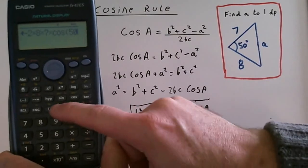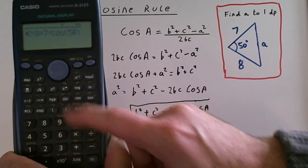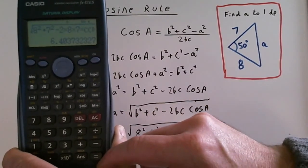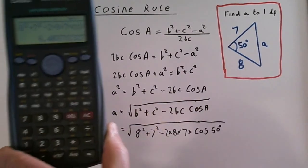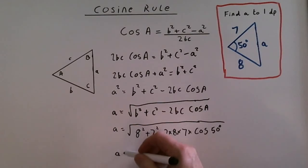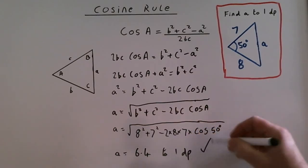You can just close that bracket. It's not really necessary, it would still work. And equals. 6.4 to one decimal place. So a equals 6.4 to one decimal place. Done.